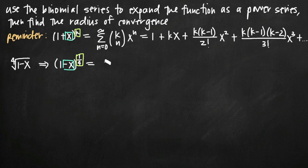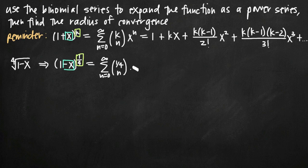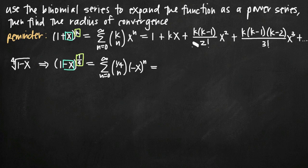So what we're going to do is say that our problem is equal to the sum from n equals 0 to infinity. We saw that k equals 1/4, so we're going to say k is equal to 1/4. We're going to leave n as it is, and we're going to replace x with negative x because in our problem we have negative x instead of positive x.